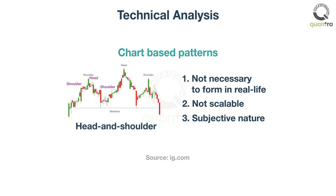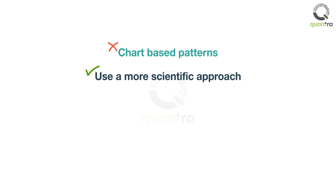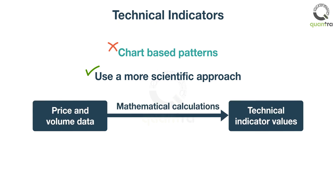With these issues associated with chart-based technical analysis, we will refrain from using them. Instead, we will lean towards a more scientific approach to doing technical analysis — that is, by using technical indicators. Technical indicators are the result of mathematical calculations done on the price and volume data. This mathematical calculation involves the use of arithmetic or statistical tools.